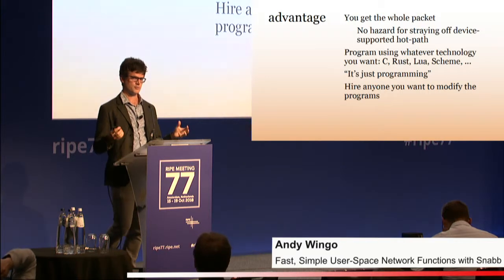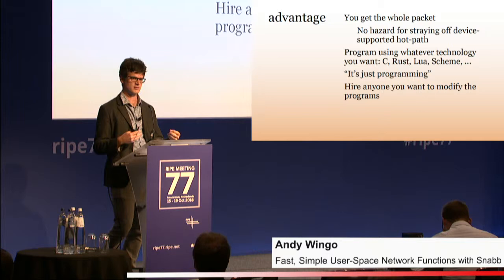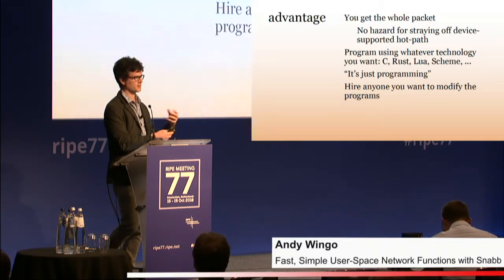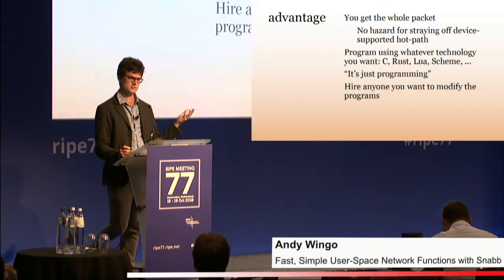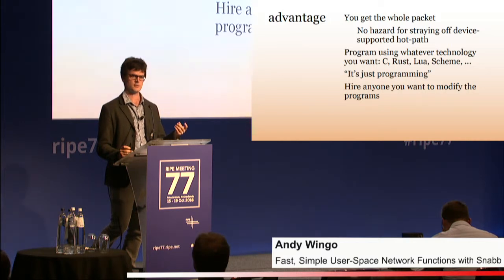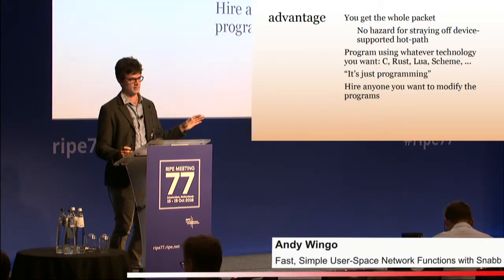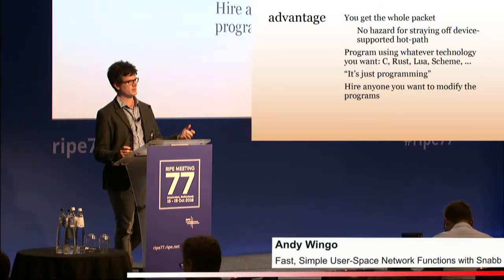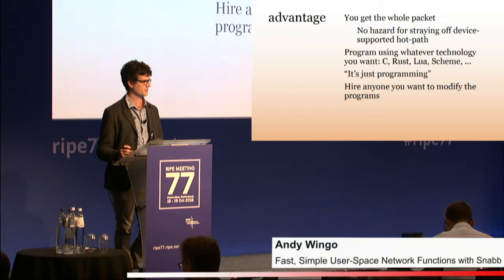The advantage is that you get the whole packet in software and can do anything with it. There's no question of fast path versus slow path, because the fast path is in hardware. You have a uniform programming model and can use whatever language you want — Rust, C, or Lua, which is what we use in Snab. All of Snab is implemented in Lua using the LuaJIT implementation, which results in fast programs. And you don't have to wait on anyone to provide functionality — you can implement new RFCs yourself.